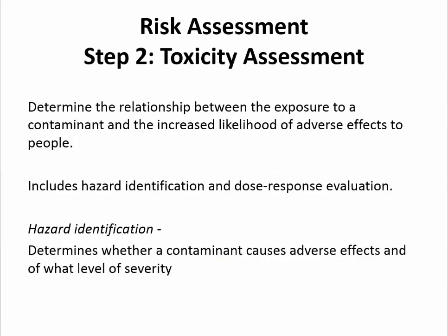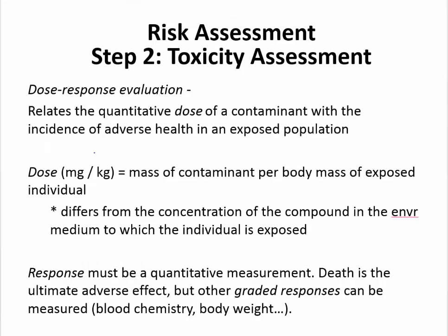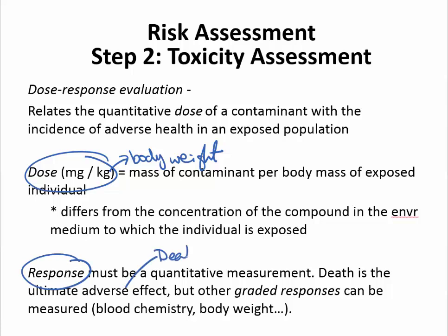The second stage is toxicity assessment. The goal is to understand the dose-response evaluation of how a chemical can affect a human at different concentrations or doses. You should have the units for dose understood — they are milligrams of the contaminant per kilogram of body weight. The response can either be an absolute response, such as death, or a graded response, which could include differences in blood chemistry or an increase in body weight such as obesity.